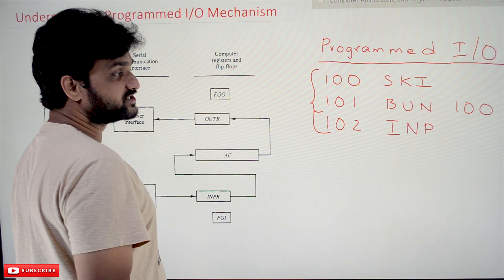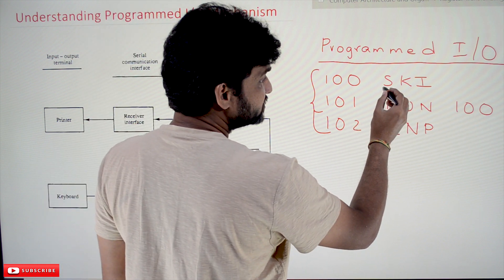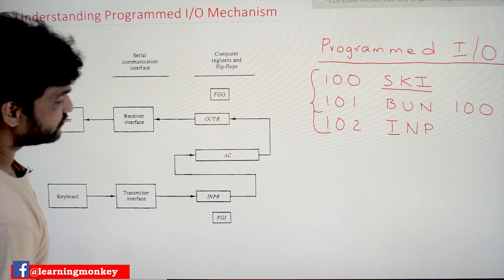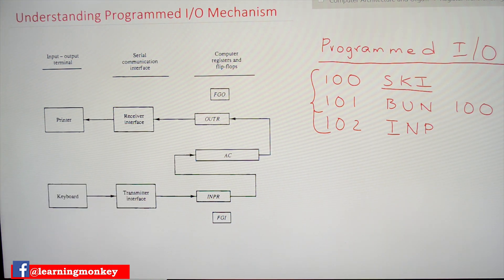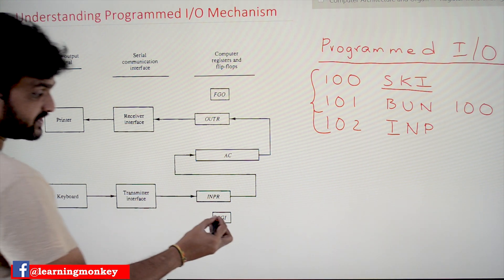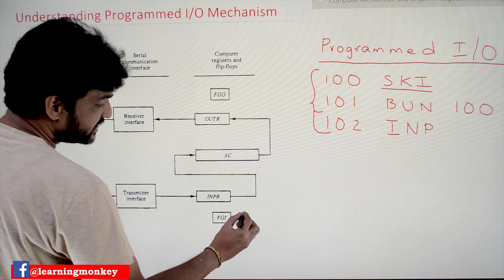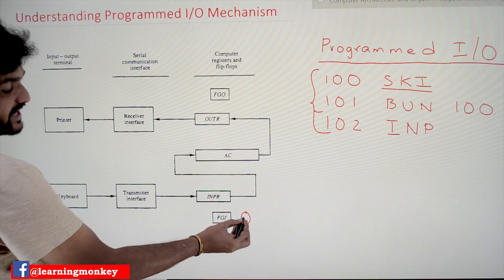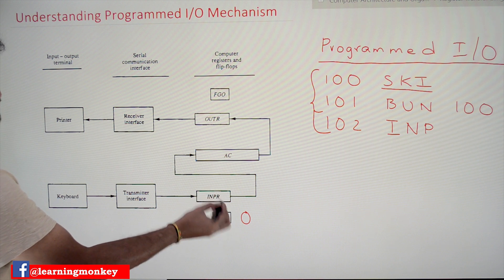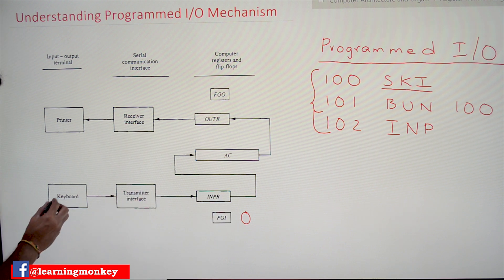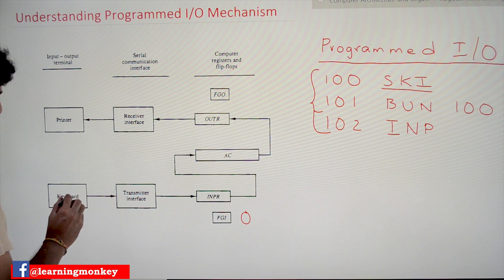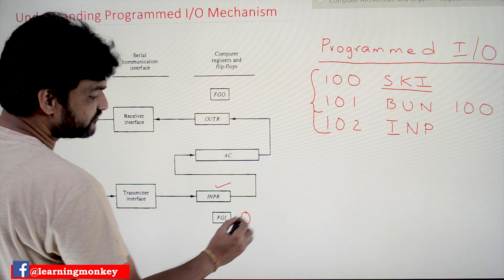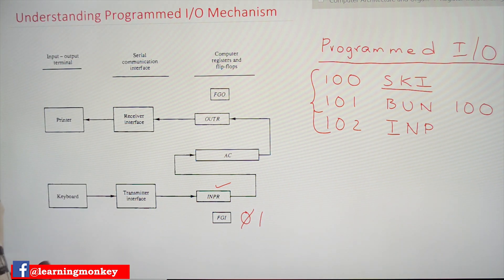Before understanding these instructions, let's recap the concept of I/O configuration. This is the block diagram for I/O configuration we discussed earlier. Initially, whenever the computer is switched on, the FGI flag will be 0, meaning there is no input value on the input register. Whenever we press a key on the device, that key value will be transferred onto the input register and the FGI flag bit is made to 1.